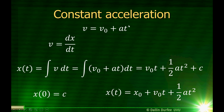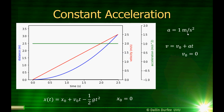The velocity changes linearly in time. If I plot velocity versus time, it's just a straight line whose slope is the acceleration. The position has a constant term, a term linear in time, and a term which is quadratic in time. So the curve of the position as a function of time will be a parabola. Green is our constant acceleration, red is the velocity — a straight line whose slope is the acceleration — and in blue we have the position, which is a parabola.